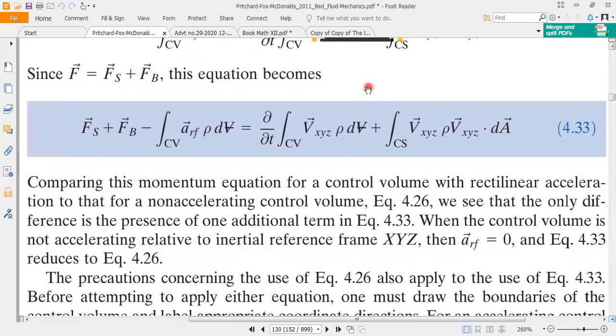Comparing this momentum equation for a control volume with rectilinear acceleration to that for a non-accelerating control volume, we see that only difference is the presence of one additional term. When the control volume is not accelerating, relative acceleration ARF is zero and we can say that equation 4.26 reduces to 4.26.